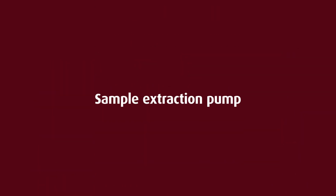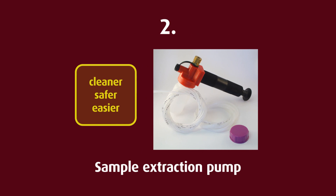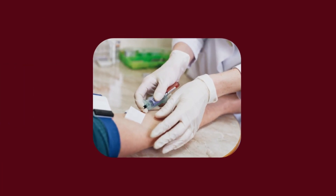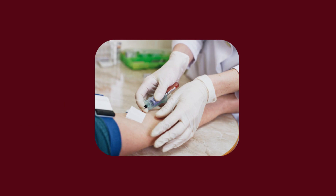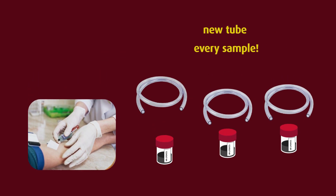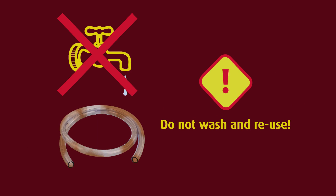Sample extraction pump: a much cleaner, safer, and easier way of taking a sample is by using a sample extraction pump. The extraction pump is a simple and low-cost way to draw a sample of oil, and the same pump can be used to sample different components. Just like you expect your doctor to use a new needle when taking a blood sample, your machine expects the same. It is imperative that you use a new tube for every single sample. Please do not try to wash and reuse sampling tubes. Yes, a needle can be sterilized and reused, but the risk of it not being done correctly is just too great — the same applies to the tubes.